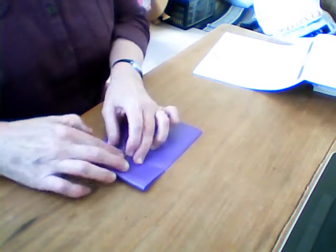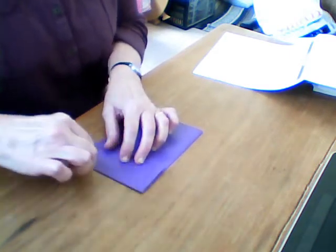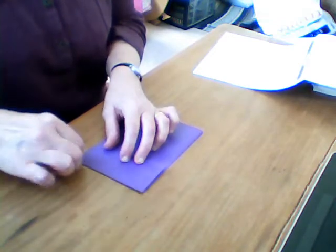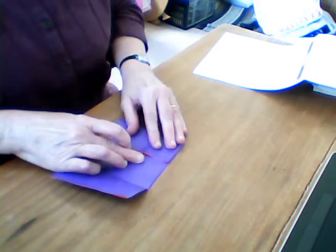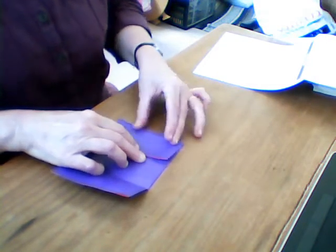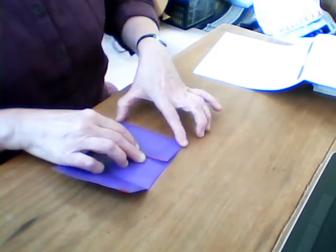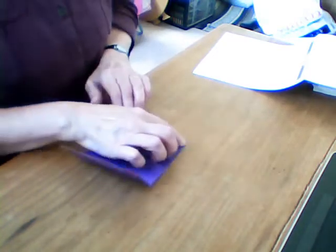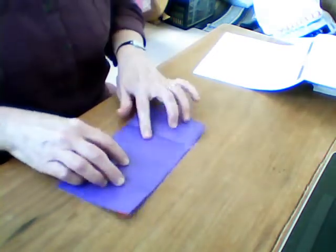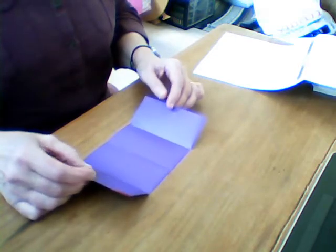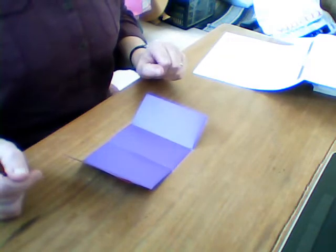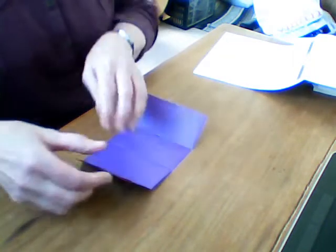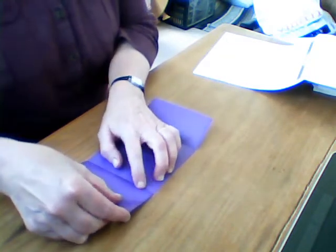And fold out again. The other side in, and fold out again, so you've now got your rectangle with three clear fold lines dividing the paper into four sections. Now each top corner you fold in to the first line to make a triangle.